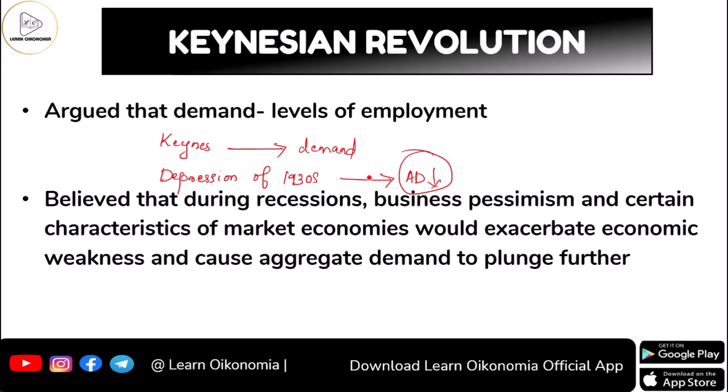The economy was very weak and fragile, and as a result, aggregate demand was very low — people were not spending, so the economy was coming down. Keynes believed that during times of recession, since businesses went through a pessimistic way of thought, market economies would exaggerate economic weakness and cause aggregate demand to plunge further. He believed that the main cause of depression is falling aggregate demand, and that it must be increased to bring the economy out of depression.